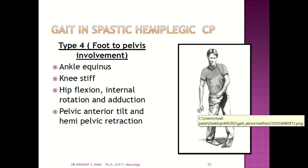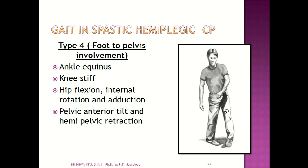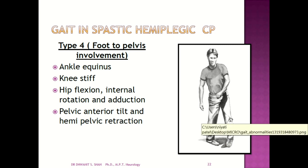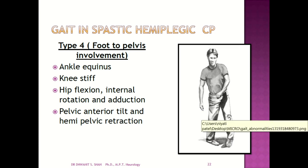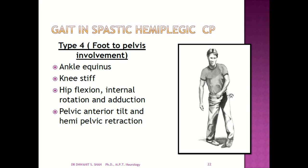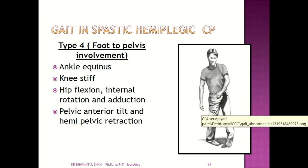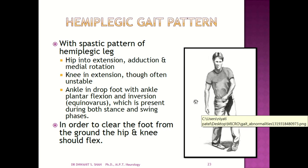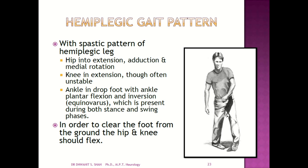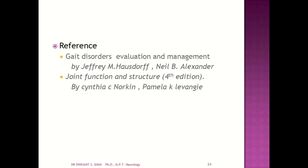Type 4 gait in spastic hemiplegia involves foot-to-pelvis involvement — the ankle is in equinus, knee is stiff, hip is in flexion with internal rotation and adduction, and the pelvis shows anterior tilt or hemipelvic retraction. In the overall hemiplegic gait pattern, the hip is in extension, adduction and medial rotation, knee in extension, and ankle in drop foot with plantarflexion and inversion — equinovarus — present during both stance and swing phases. To clear the foot from the ground, hip and knee must flex. This covers all the different types of gait seen in spastic cerebral palsy children.